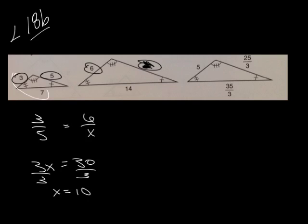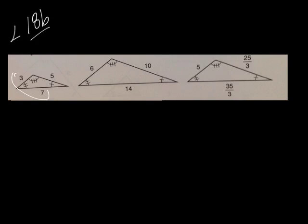So I can use my idea of proportions in order to find out what any of these lines are that I don't know. If I don't know, let's say this, I can take 3 over 7 equals 6 over x. Because we would call this x. I could also go 5 over 7 equals 10 over x.